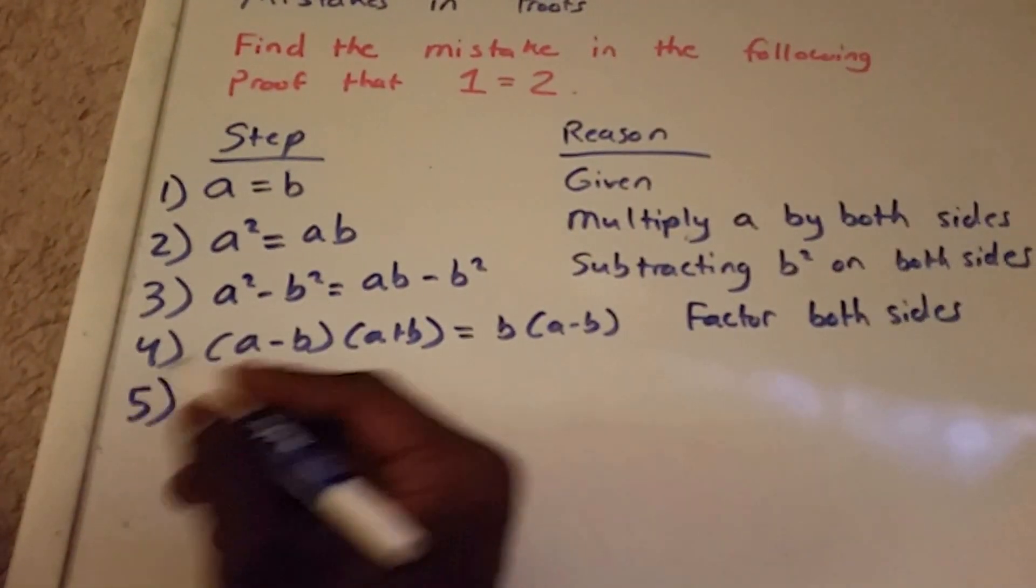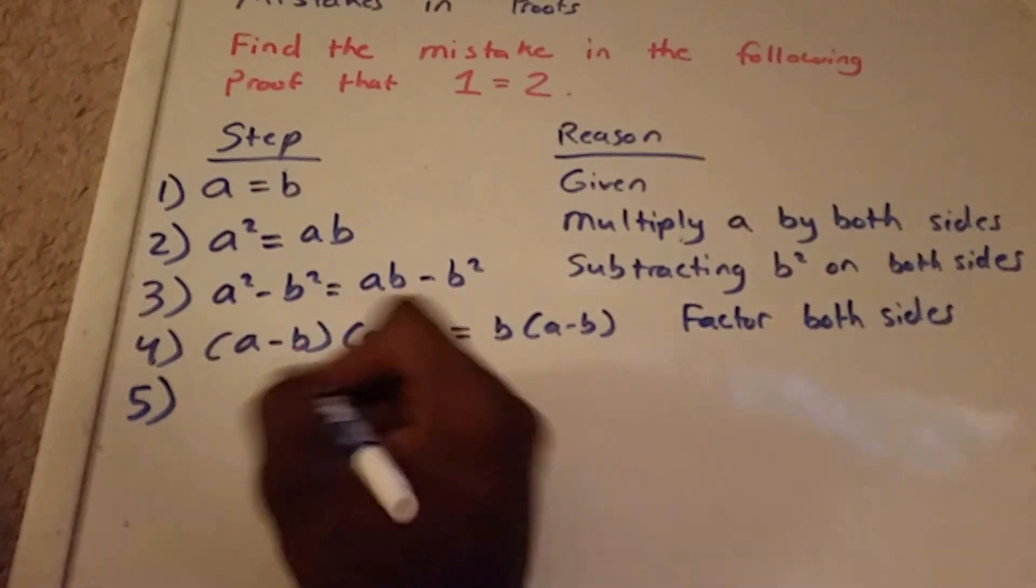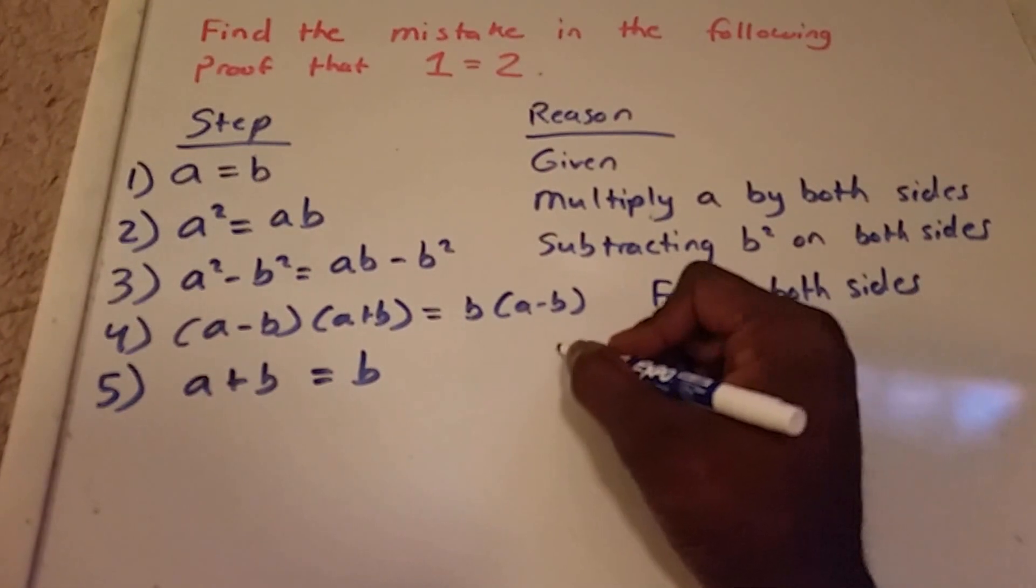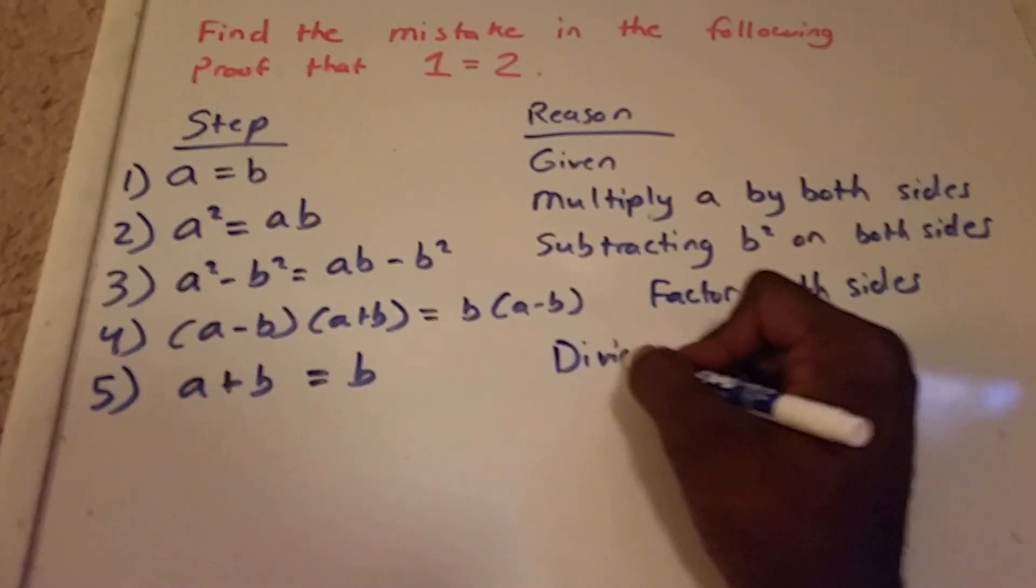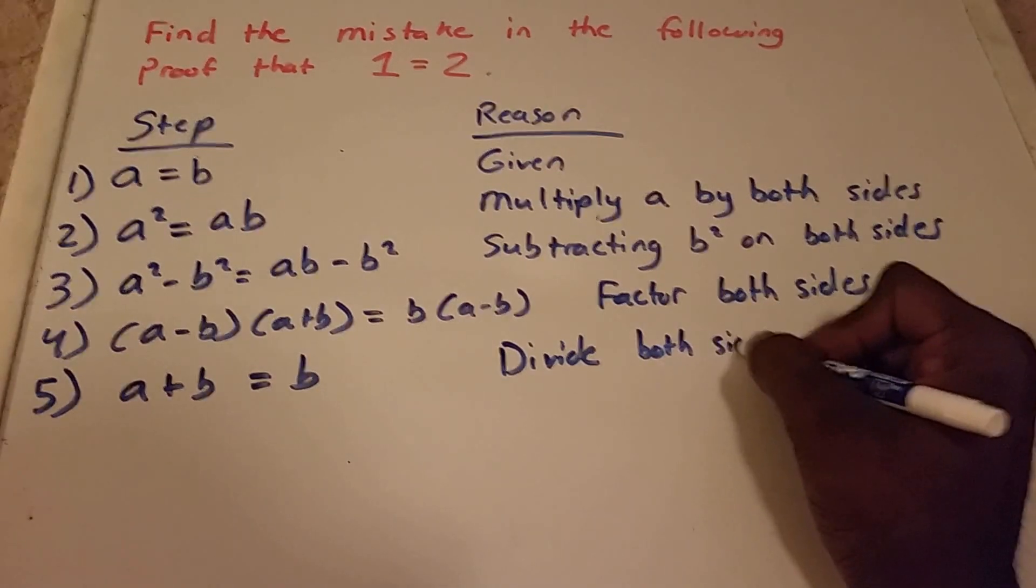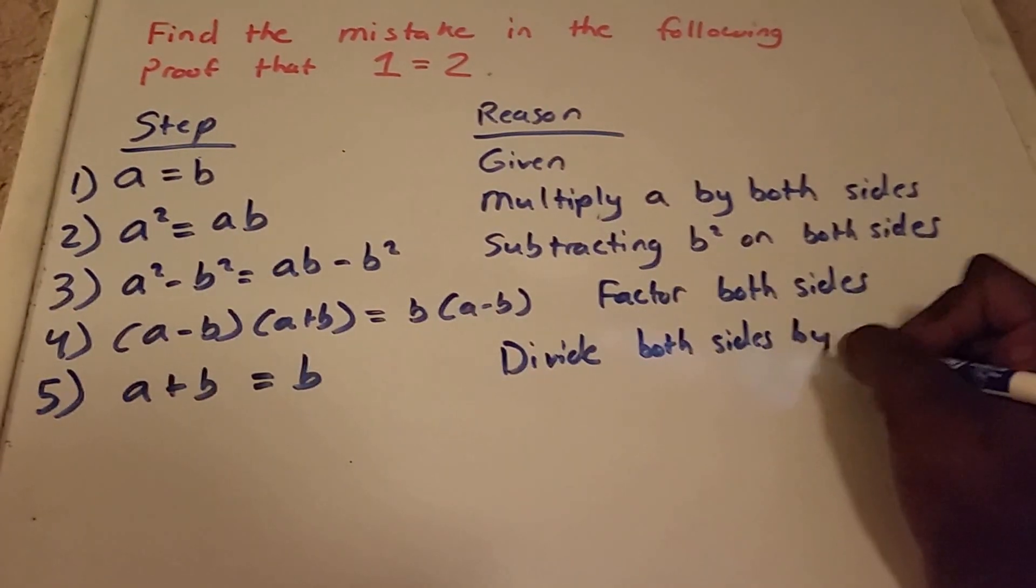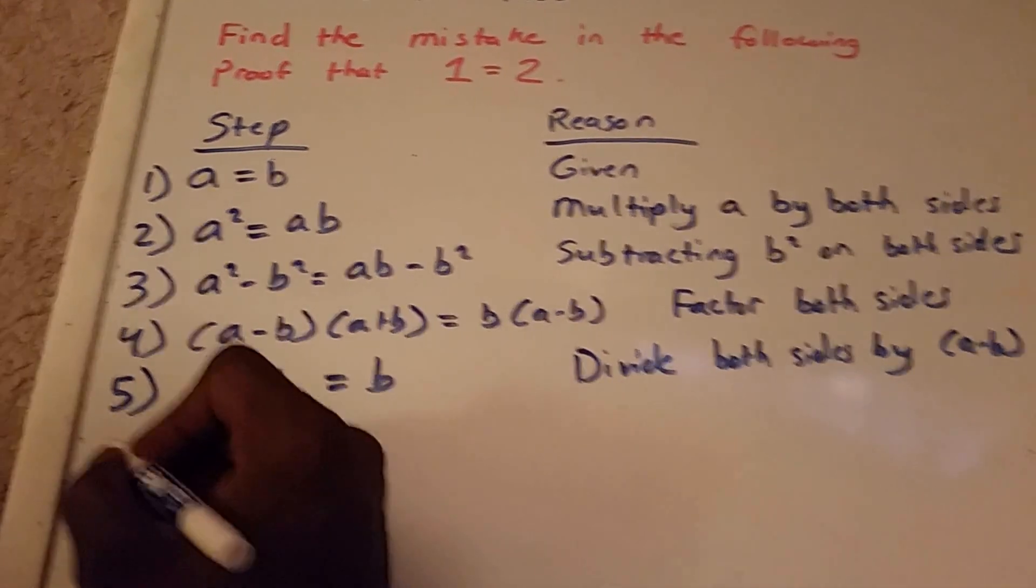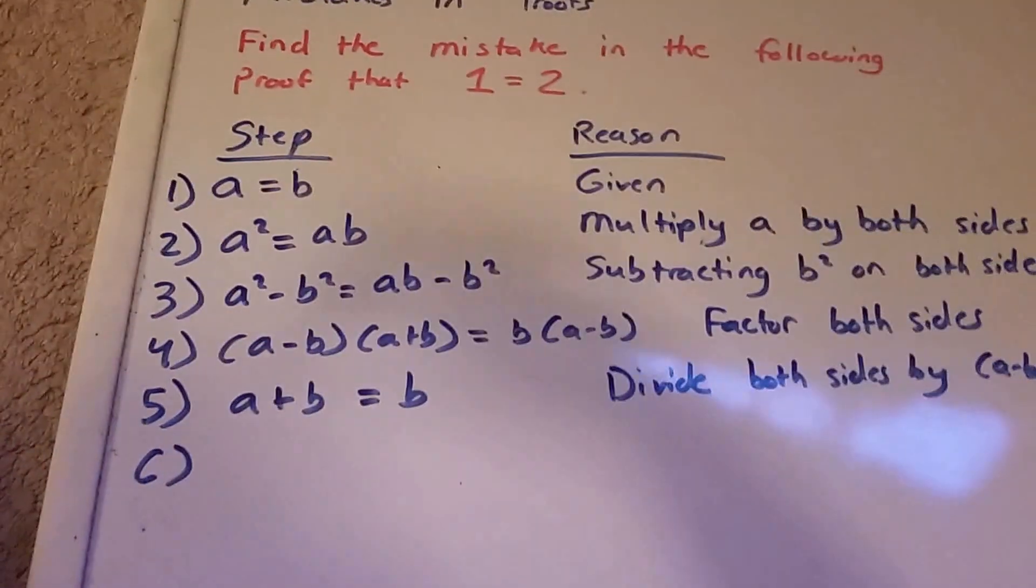Step 5: we're going to get a plus b equals b. The reason behind this is because I divide both sides by (a minus b), so we get that equation there.